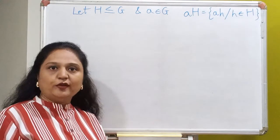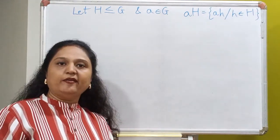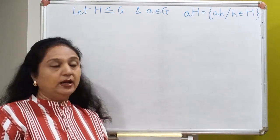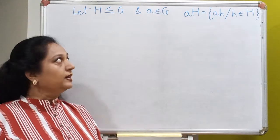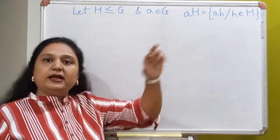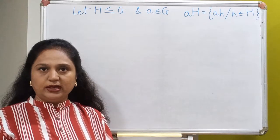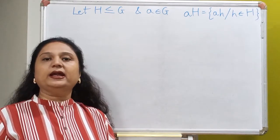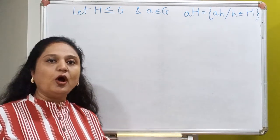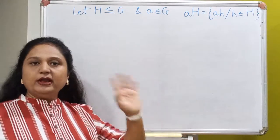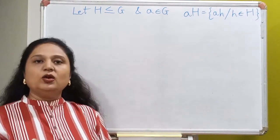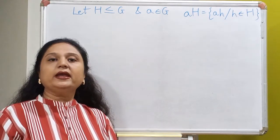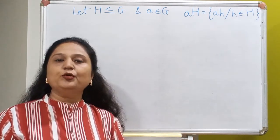There are two ways of looking at a left coset: either you multiply every element in the subgroup H from the left by the element A, or keep in mind that every element in this set has to look like a product of two elements where the first element has to be A and the second element could be anything so long as it lies in H. So every element in the left coset AH looks like a product where the first element is A and the second element is any element of the subgroup H.